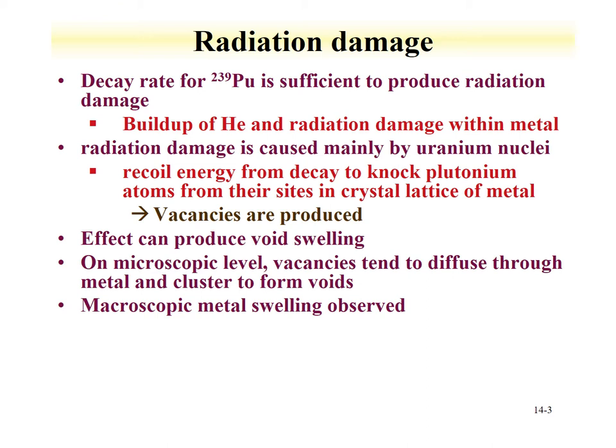The recoil of the uranium daughter is what is the prime generation of the radiation damage effects. This is due to the recoil energy — from the Q value calculation we can see how much energy goes into the alpha decay and some that goes into the uranium daughter. It's on the order of keV, but that's certainly enough energy to knock atoms off their lattice sites, and vacancies are produced.